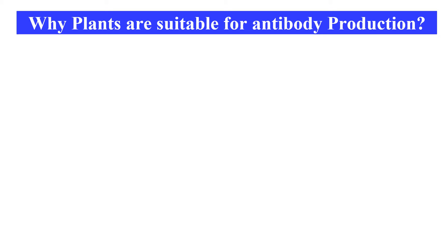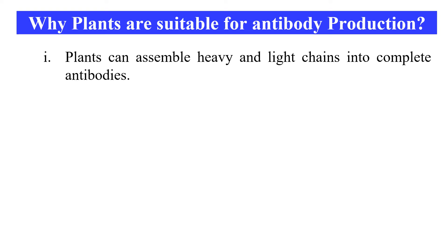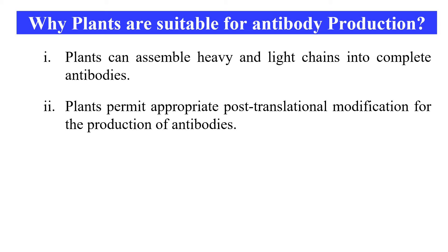Now, why are we using plants for the production of antibodies? What are the advantages of plants as a model for antibody production? First, plants can easily assemble the heavy and light chains into the complete antibody — we introduce the genes for heavy and light chains, and the plant itself combines them to make a complete functional antibody. Second, plants also permit post-translational modifications. Post-translational modifications are changes done to a protein after its translation, and these make the protein functional. Antibodies require post-translational modifications such as glycosylation — the attachment of carbohydrates. Plants permit these post-translational modifications so that a functional antibody is produced.